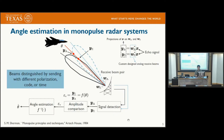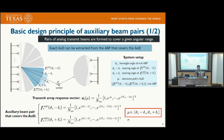We extend this paired beam approach to millimeter-wave communication systems to provide high-resolution channel estimates. Because the beam pair design for monopulse radar is not suited for communication systems, we custom design the beam pairs and develop a set of feedback and quantization methods to better support this beam pair-based method in millimeter-wave communication systems.